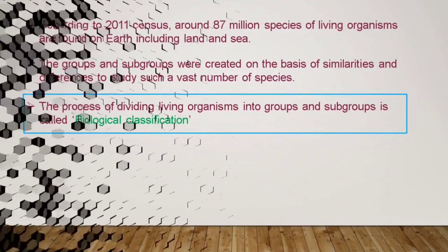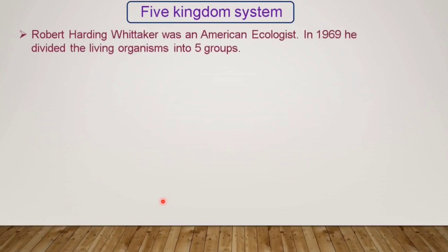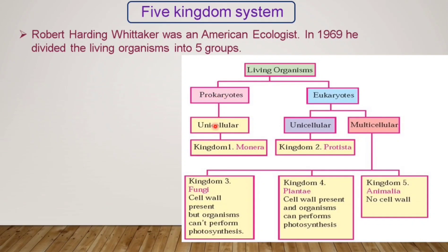Let us move towards the second part: the five kingdom system. A scientist named Robert Harding Whitaker, an American ecologist, in 1969 divided the living organisms into five groups. First, living organisms were divided into prokaryotes and eukaryotes. Prokaryotes do not have a defined nucleus. Under prokaryotes, organisms are unicellular, meaning single-celled, and this gives us Kingdom One: Monera.